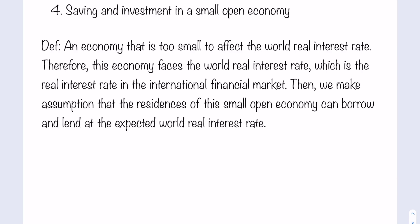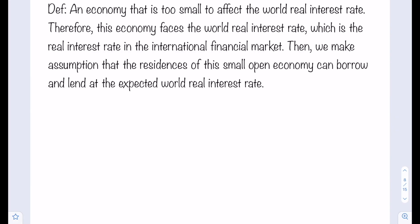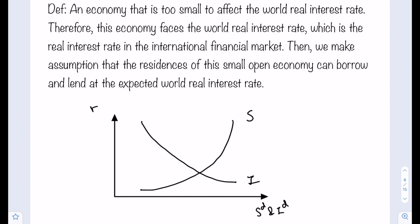Now let me draw the goods market equilibrium under such a case. Similar to before, when we derive the saving and investment equilibrium for an economy, we draw a diagram with the vertical axis representing the real interest rate r, and the horizontal axis representing desired saving and investment. The saving curve slopes upward because when the real interest rate is higher, people prefer to save more. The investment curve slopes downward because when the real interest rate is higher, people prefer to invest less. For a small open economy given a world interest rate, let's assume the economy faces an interest rate like R1.